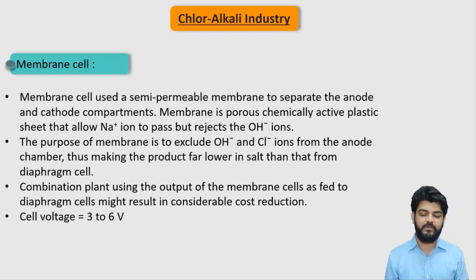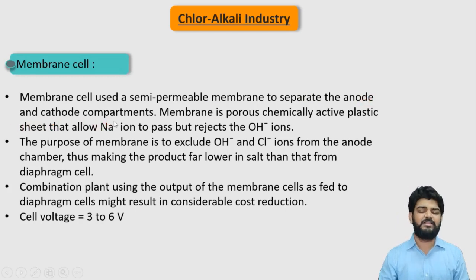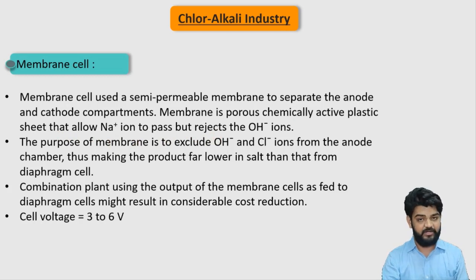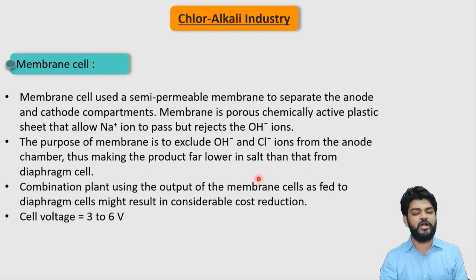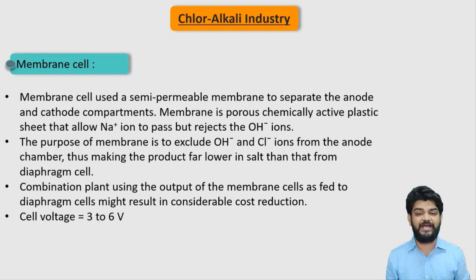Now let's understand the membrane cell for the production of NaOH and chlorine, which we have already covered in the previous video. The membrane cell uses a semi-permeable membrane to separate the anode and cathode compartments. The membrane is a porous, chemically active plastic sheet that only allows Na⁺ ions through and rejects OH⁻ ions, resulting in a product with lower salt concentration than from the diaphragm cell.